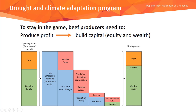That gives us a thing called operating profit, which is the return to the total assets employed in producing that beef. If we then take out the payment made for the use of other people's capital — which could be interest, rent, or a lease payment — we get net profit. Net profit is the return to your equity in the business.